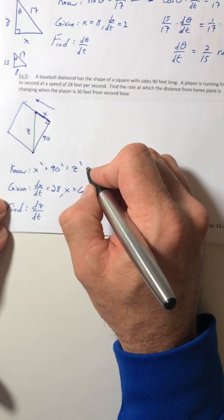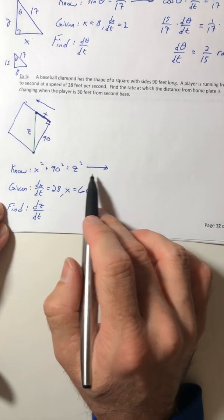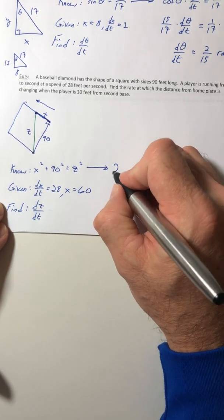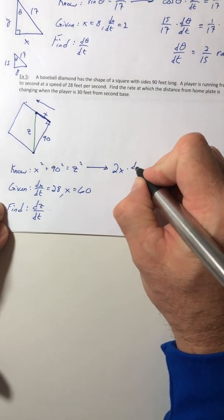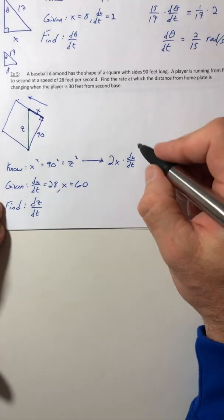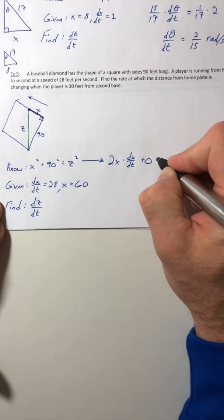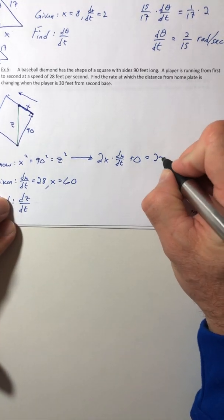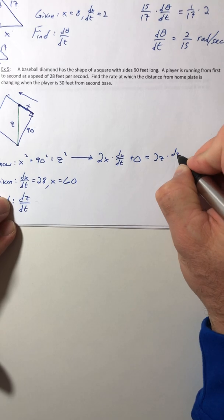So let's start getting a derivative. The derivative of that equation: 2X times DX DT. The derivative of 90 squared is 0. The derivative of Z squared: 2Z DZ DT.